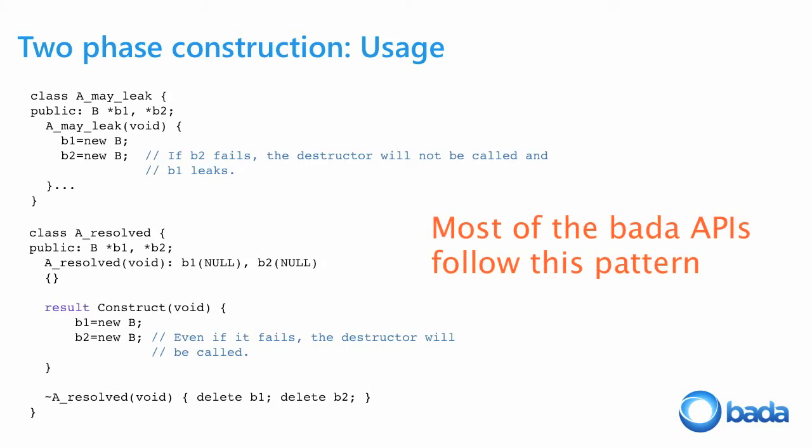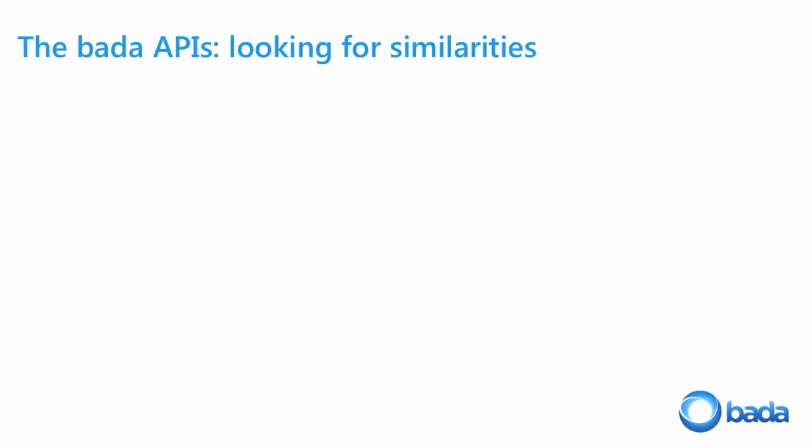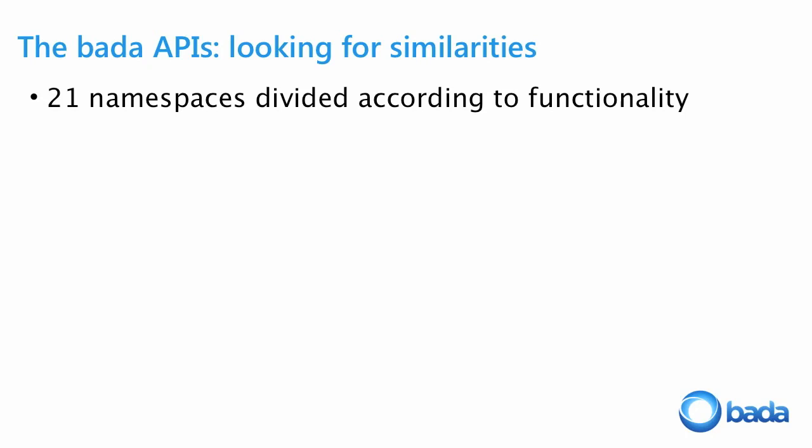Two-phase construction is particularly important even if you're coming from another environment. Some developers coming to Bada are confused why nothing works — they create objects and start making calls, wondering why nothing happens. The reason is they've forgotten to call construct. Most Bada APIs follow this pattern, but not all. If you look at a Bada class and it has a construct method, you know you need to call it.